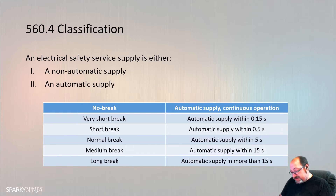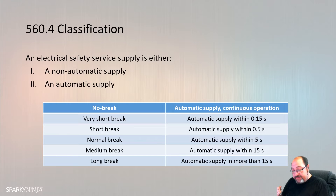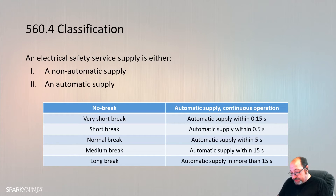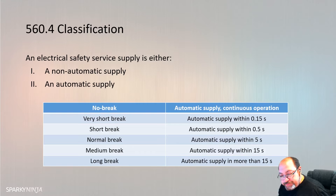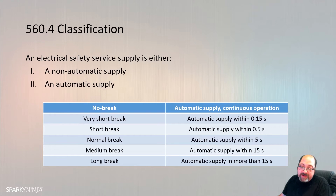Safety service circuits shall not pass through locations exposed to fire risk unless they are fire resistant, and in no case shall they pass through an area of explosion risk. There is also mention that overcurrent protection may potentially be omitted for safety services.